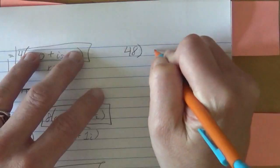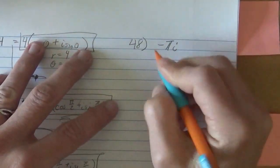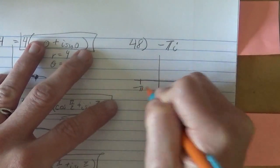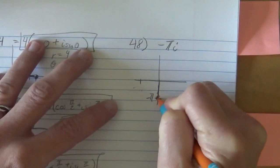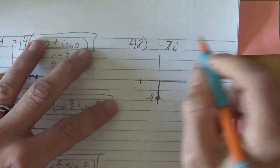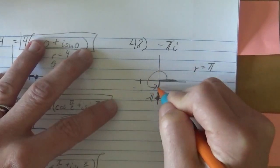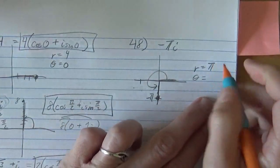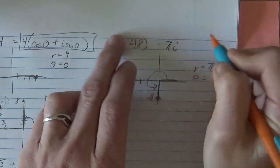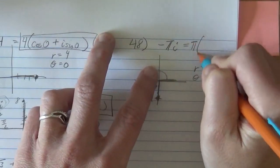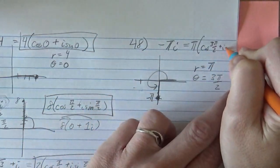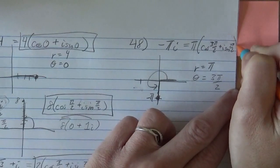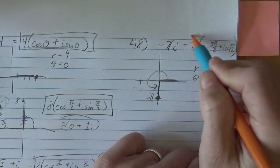And maybe I'll do 48 real quick. I'm looking at 48. It's just negative pi i. And so if it's negative pi i, you're just negative pi on the imaginary, not on the real, on the imaginary. So you're down here. So your radius is definitely pi, and your angle starting from here is 270 degrees, which the equivalent of that is 3 pi halves. So you can say that this is pi cosine 3 pi halves plus i sine 3 pi halves. Cool. And that's that.